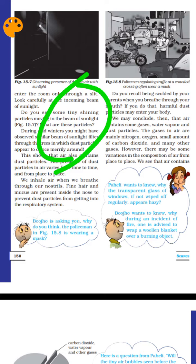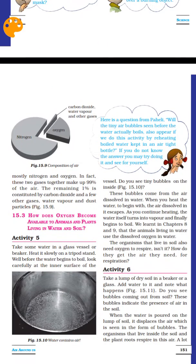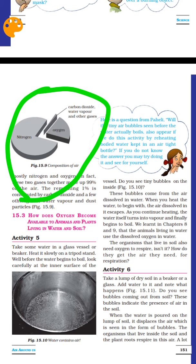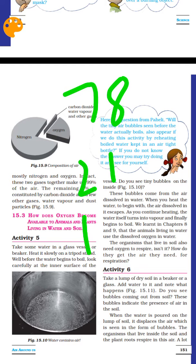Policemen regulating traffic at crowded crossings often wear masks. I want to discuss pollution. The carbon dioxide content will be tested along with the nitrogen content. The nitrogen content is 78% and the oxygen content is 21%. The carbon dioxide is about 1% of the air.